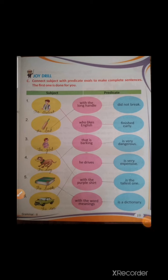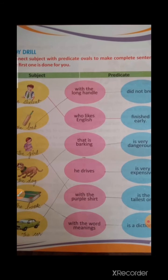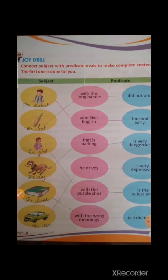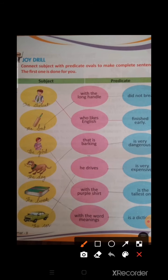Joy Drill: Connect the subject with the predicate to make complete sentences. The first one is done for you. Here we will connect the subject with the predicate part to make complete sentences. First one: 'The student who likes English finished early.'